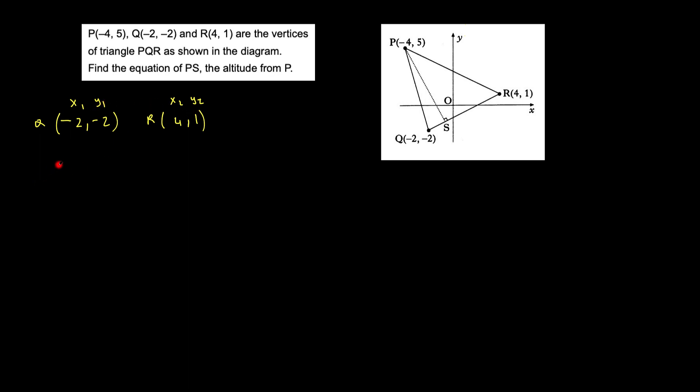Now in order to find the gradient, we'd use M, so I'll call the gradient MQR. That's equal to y2 minus y1 over x2 minus x1. So my y2 is 1, so I just substitute these points in. You need to be careful with this minus 2, so that'll be 1 minus (-2) over 4 minus (-2). So that'll give me 1 plus 2 over 4 plus 2, and that of course will give me 3 over 6.